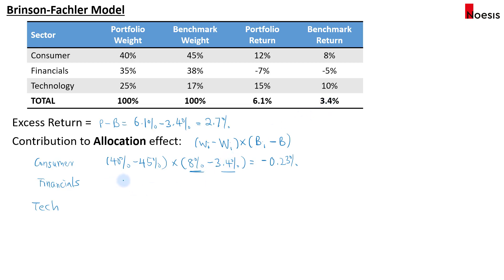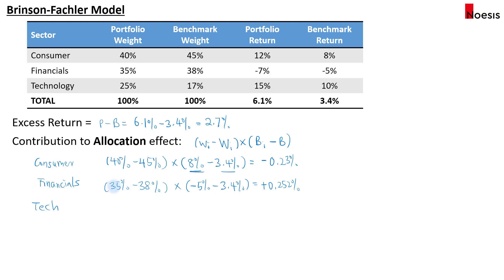For financials, that would be 35% minus 38% — also underweighting. The benchmark return for financials is negative 5% against 3.4% overall, giving positive 0.252%. The manager made the right decision to underweight a sector that is underperforming in the benchmark.